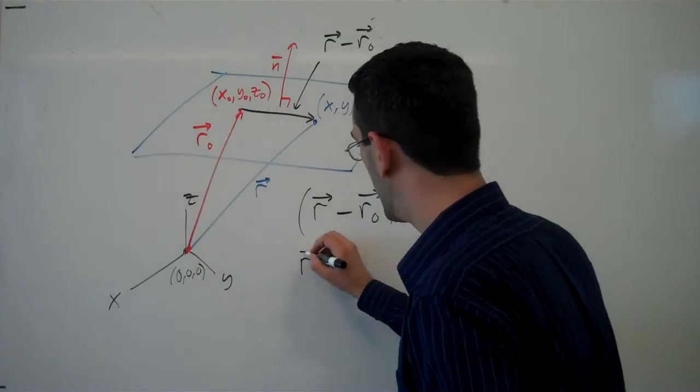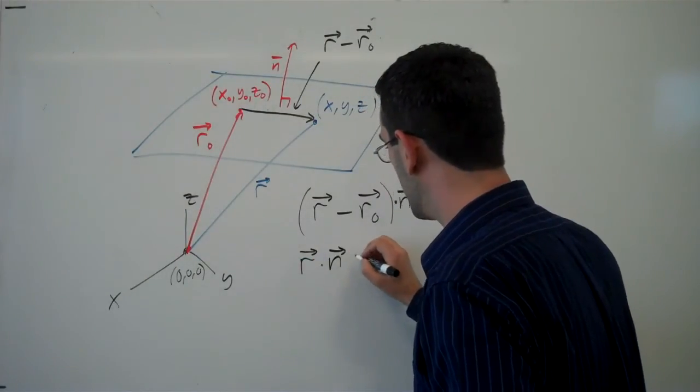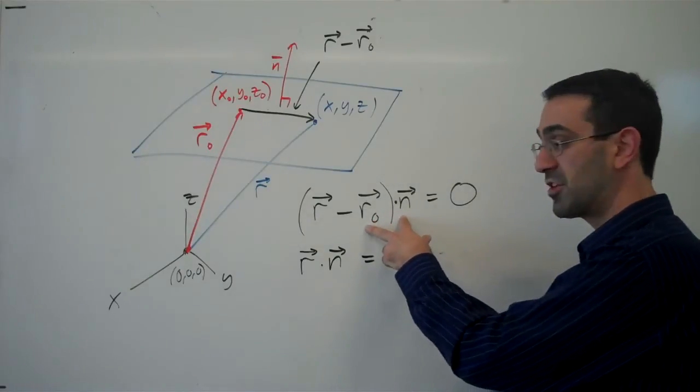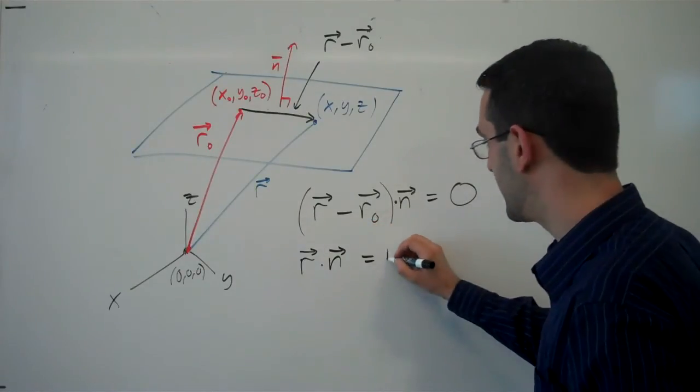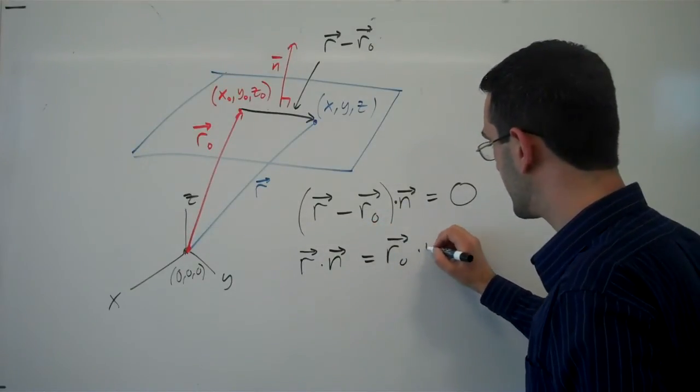Distributing this, we get r dot n. So distributing this and then moving it to the other side, r_not dot n.